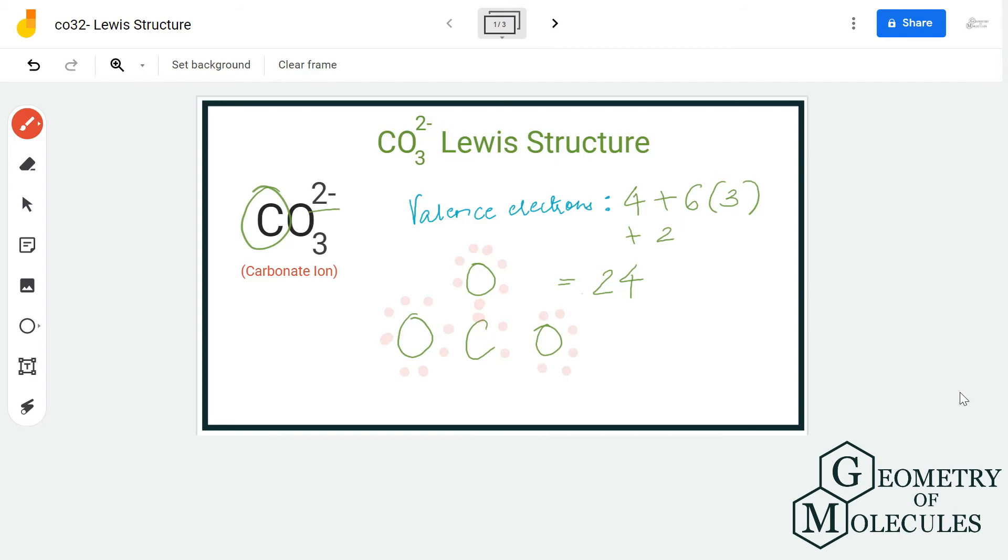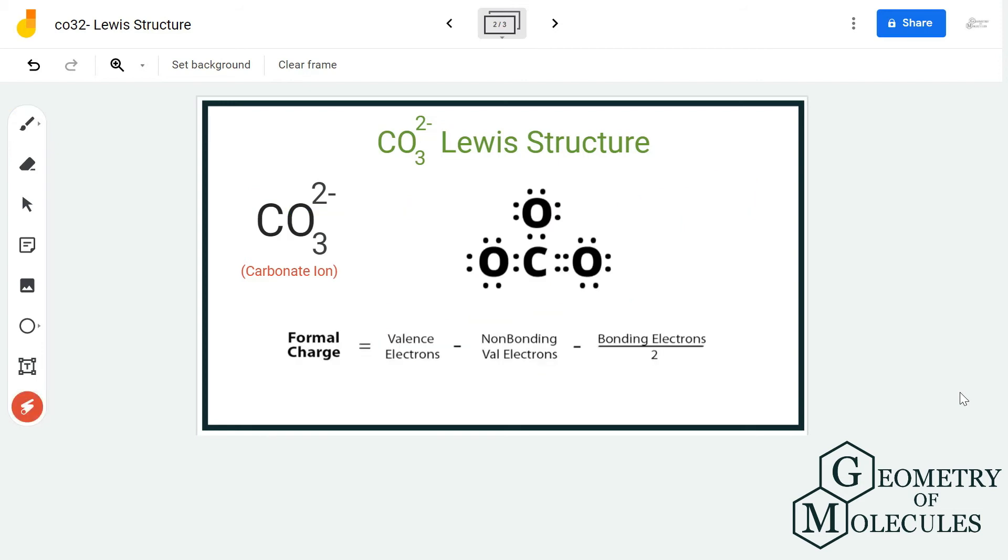To confirm if this is the valid Lewis structure for this ion and it is relevant, we are going to look at the formal charges. Here you can see the carbon has a net charge of zero, which is good because it is the less electronegative atom so it should have charges near to zero.